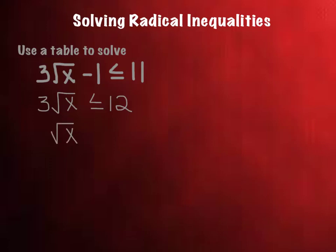The square root of x is less than or equal to 4, and then we would square both sides. X is less than or equal to 16, and that would be partially true, x is less than or equal to 16.